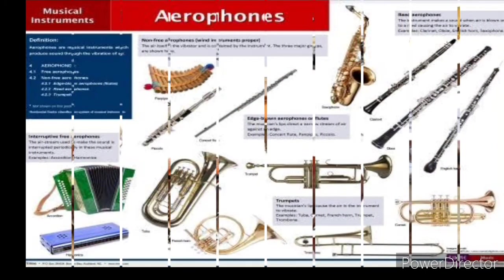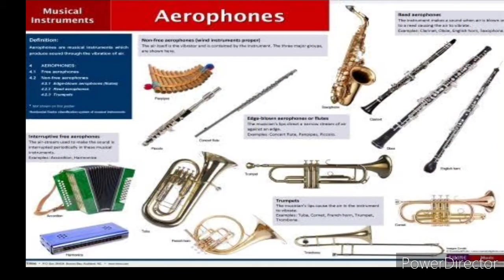The third category is aerophones. Aerophones are instruments made of metal; they can belong to wind or brass. They are instruments you have to blow air into, because it is with the help of air that the instruments produce sound. Examples include the tin whistle, saxophone, trumpet, and so on.